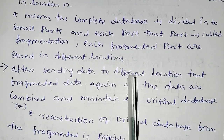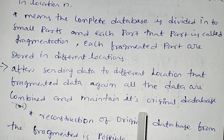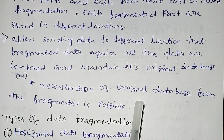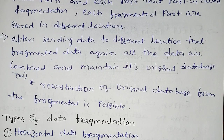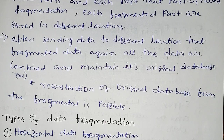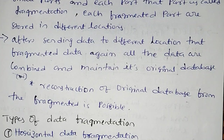After sending the data to different locations, that fragmented data can again be combined to maintain its original database — reconstruction of the original database from the fragmented parts is possible. We can change the data from different locations, we can change the data from fragmented data, and we can combine it with the original database. So we are going to do fragments in different locations, combine them, and reconstruct the original database. Reconstruction from fragmented is possible. We have types of fragmentation.